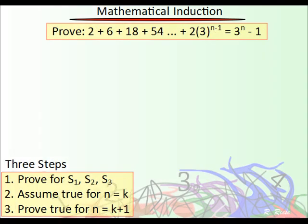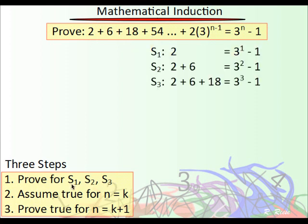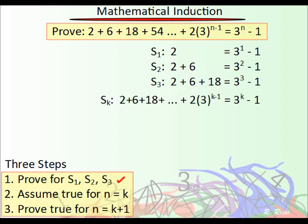Okay, let's try another one. Let's go ahead and prove that this formula on the right equals the sum of these values. Recall that step 1 is to prove that it works for the sum of 1 number, 2 numbers, and 3 numbers. So if you plug in 1, your answer should be the same as adding the first 1 number, which is 2. If you plug in 2, the answer should be the same as adding the first 2 values. Plug in 3, and the answer works to give you the first 3 values. They all check.